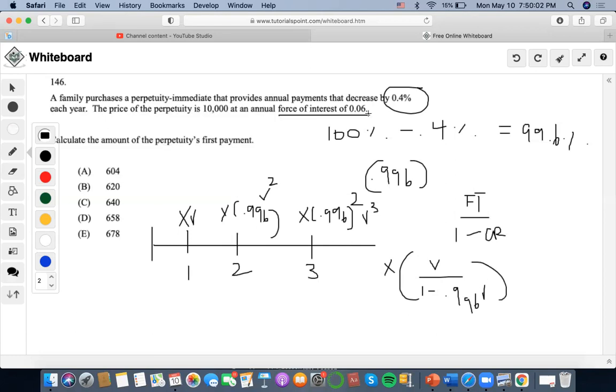Now, it says that the annual force of interest is 0.06. So we're going to have to find the present value of this in terms of force of interest. So I'm going to convert V to e to the negative 0.06Y because we're discounting. If we were accumulating, that's going to be positive, right? Over 1 minus 0.996 e to the negative 0.06.